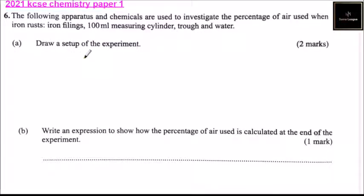Part A. Draw a setup of the experiment and you get two marks. So for you to be able to do that, what you do is you can draw a trough like this one. So that's a trough.